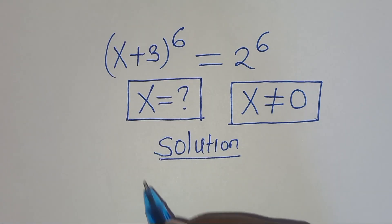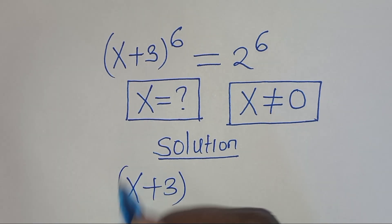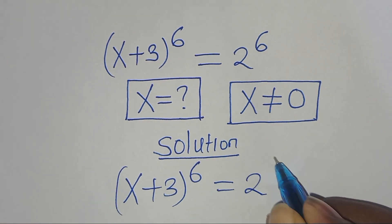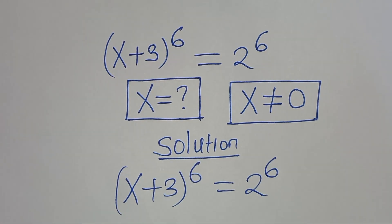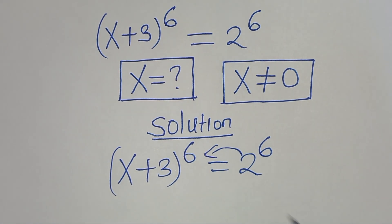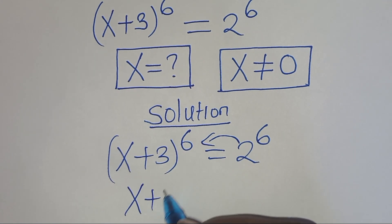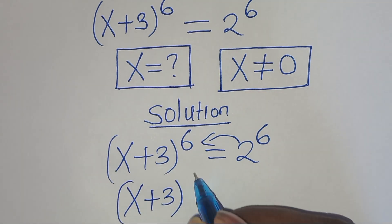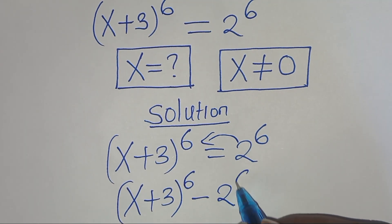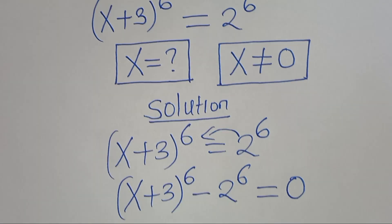So we have x plus 3 raised to the power of 6, equal to 2 to the power of 6. The first step is to take 2 to the power of 6 to the left hand side, so that we have x plus 3 raised to the power of 6, subtract 2 to the power of 6, equal to 0.